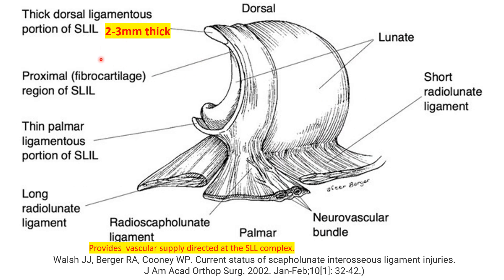In this view, where the scaphoid has been removed, you can see the C-shaped ligament with the thick dorsal component of the scapholunate ligament, which provides the strong stability between the lunate and the scaphoid. The radioscapholunate ligament on the volar surface has blood supply that provides circulation to the ligament complex and partly to the scaphoid.